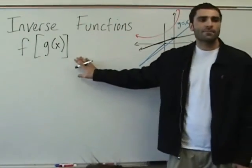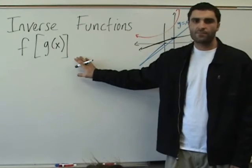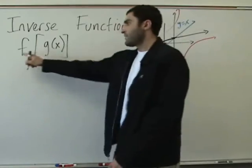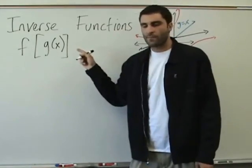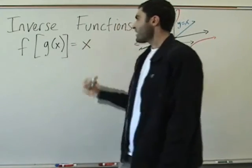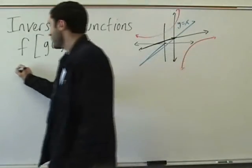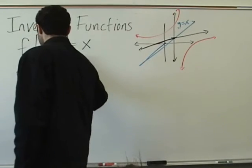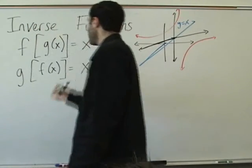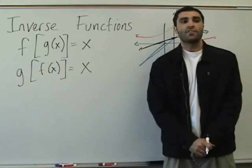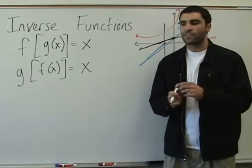All right. Do you remember this concept? F of G of X. Yes. Okay. If F of G of X, this means there are two functions here. There are two functions. F is a function. G is a function. If G equals X and G of F of X equals X, then you know that F and G are inverses of each other.